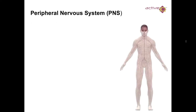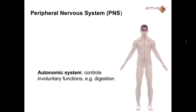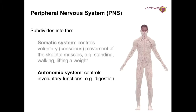The peripheral nervous system includes sensory nerves and motor nerves. It acts like a messenger, sending information to the brain, which then decides what happens and sends a signal back. The autonomic system controls involuntary functions such as digestion, while the somatic nervous system controls voluntary movement such as skeletal muscle — helping us when standing, walking, and lifting a weight.